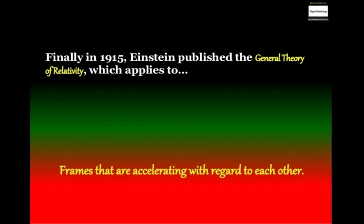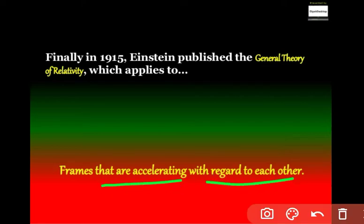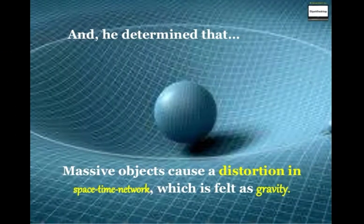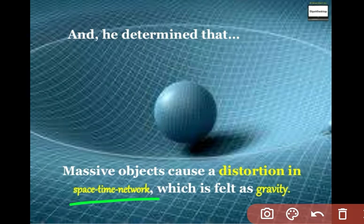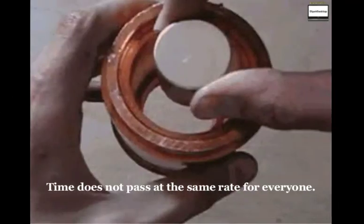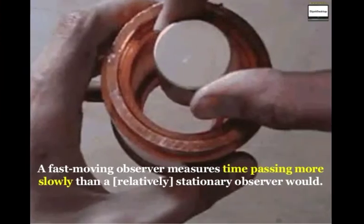Finally in 1915, Einstein published the general theory of relativity which applies to frames that are accelerating with regard to each other. He determined that massive objects cause a distortion in the space-time network which is felt as gravity.